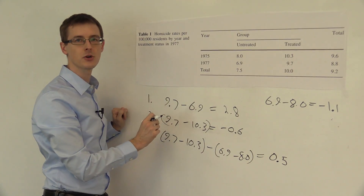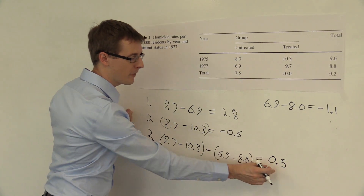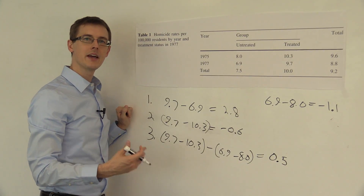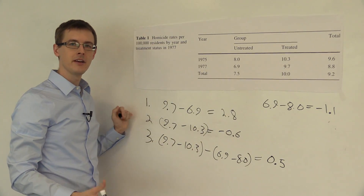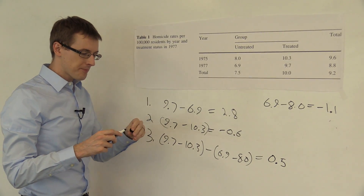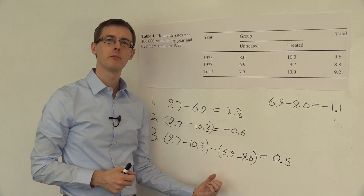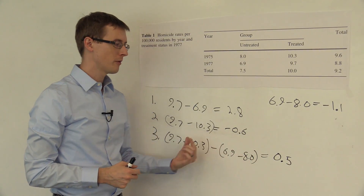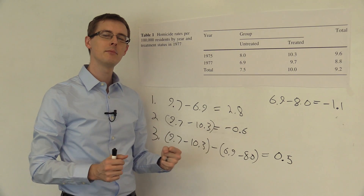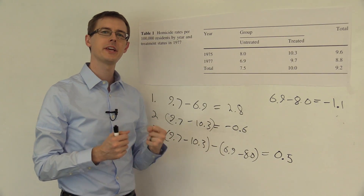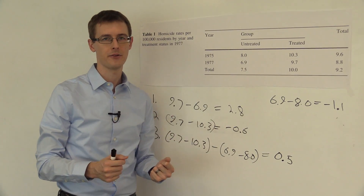So if you were to go to the untreated states and implement the death penalty, this analysis would say that homicide rates would actually increase. This idea of assuming common trends and then removing it from before-and-after comparisons is the main idea behind all the ways we're going to get at causal effects using panel data.